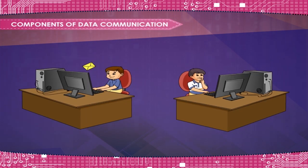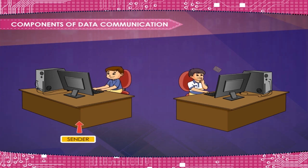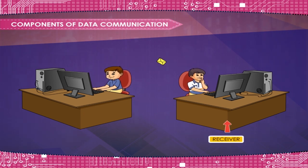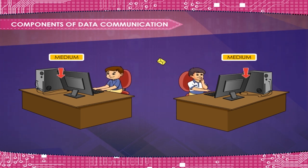Components of data communication: Message — the message is the information to be communicated. Sender — the sender is the device that sends the data message. Receiver — the receiver is the device that receives the message. Medium — the transmission medium is the physical path by which a message travels from sender to receiver.